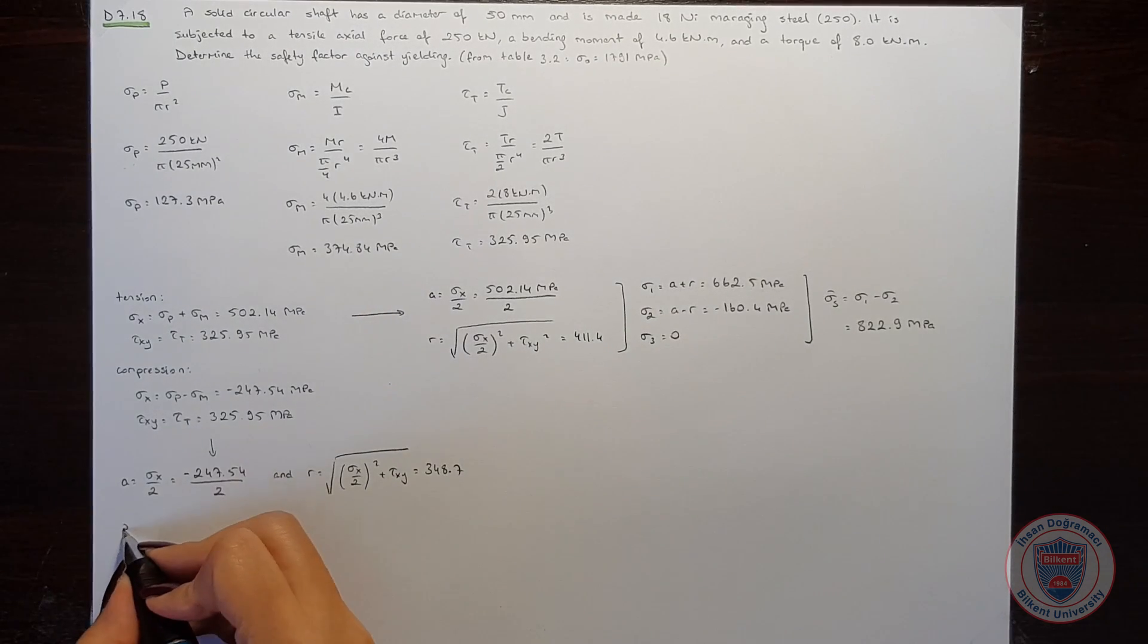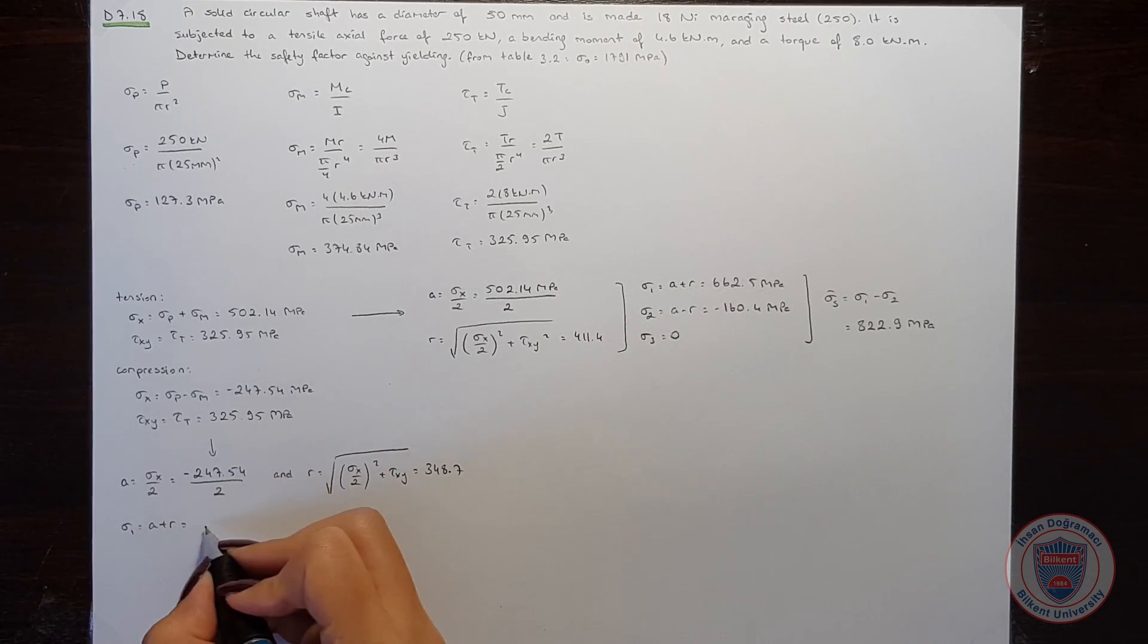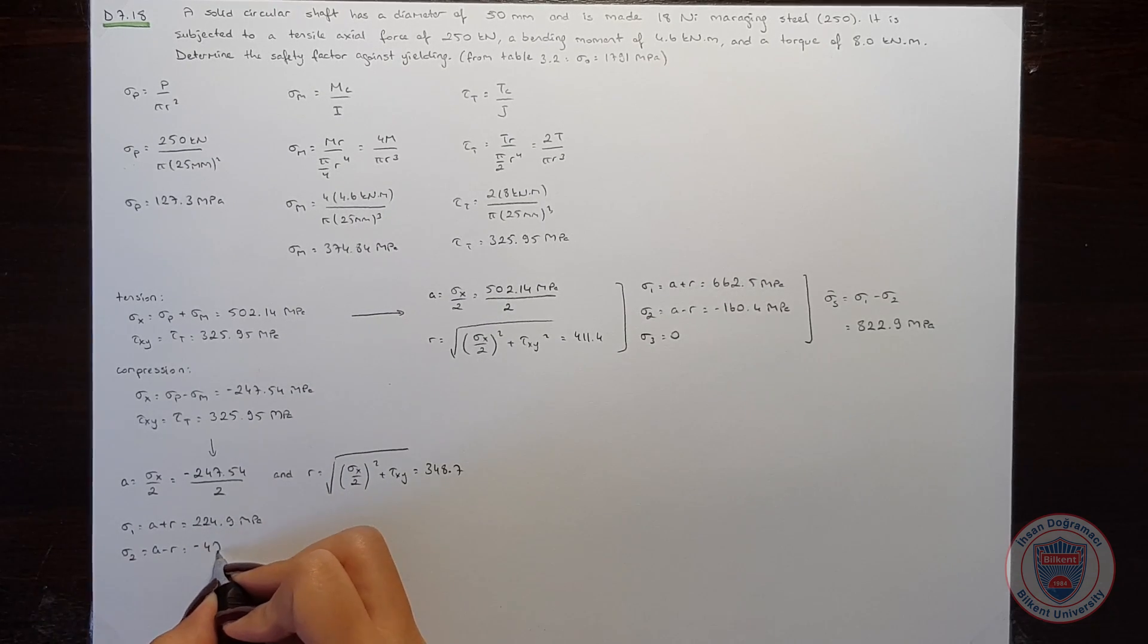So, when we calculate sigma 1, which is equal to a plus r, we will get 224.9 MPa. And sigma 2 will be a minus r, which will be minus 472.4 MPa. And finally, sigma 3 will be 0.